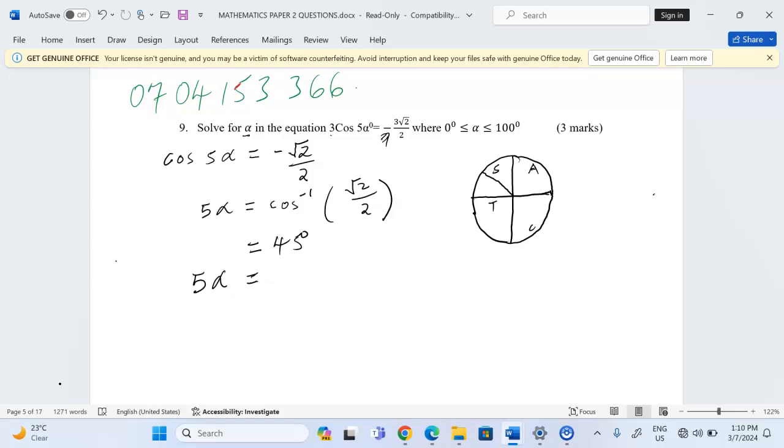In the first quadrant, we don't need 45 there because their trigonometric ratios are positive. So we need 45 in the second quadrant and also in the third quadrant.